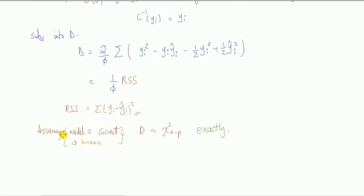We're assuming here that if the model is correct and the phi is known, then D is not approximately chi-square but is exactly chi-square with degrees of freedom n minus p. So we don't need here n tending to infinity. This is an exact result, an exact finite sample result.